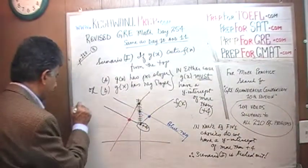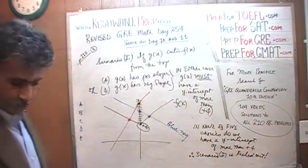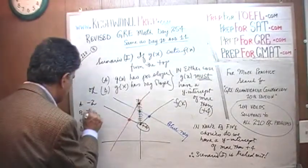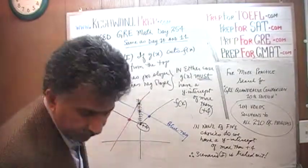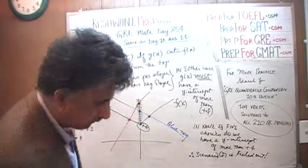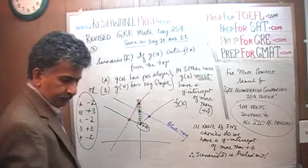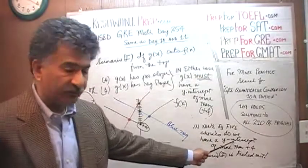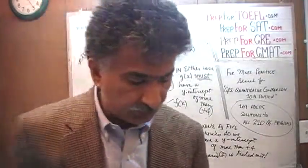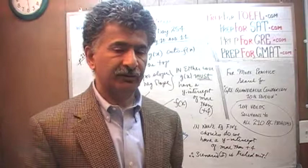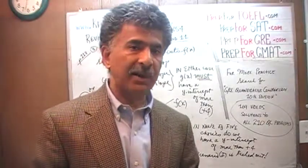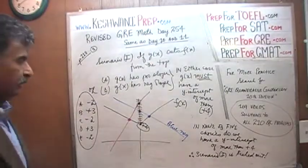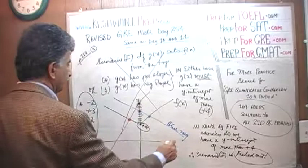If you look at the answer choices a, b, c, d, and e: a has a y-intercept of negative 2, b has a y-intercept of positive 3, c has a y-intercept of negative 2, d has a y-intercept of positive 3, and e has a y-intercept of negative 2. In none of these 5 choices do we have a y-intercept of positive 4 or more, which means however g(x) is cutting f(x), it is happening at the bottom of the graph. The top is not where the action is taking place. Scenario 1 is ruled out. Let's look at scenario 2.